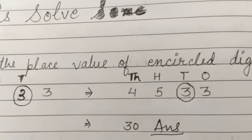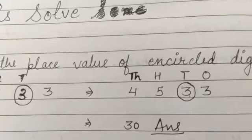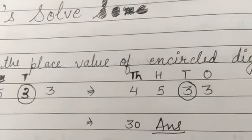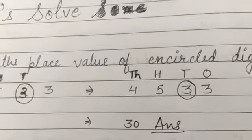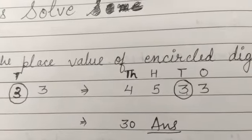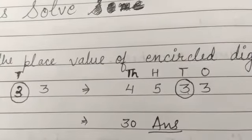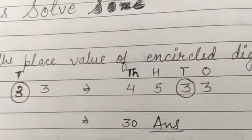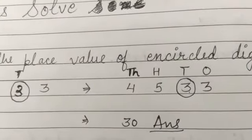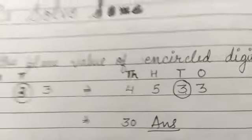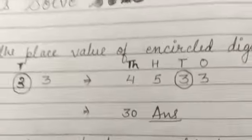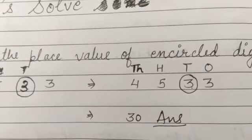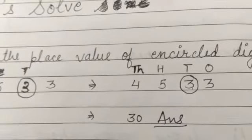Since the circled digit is 3 and it is in the tens place, we write its place value as thirty. The digit 3 is written under tens, so its place value is thirty. That is our answer: thirty.